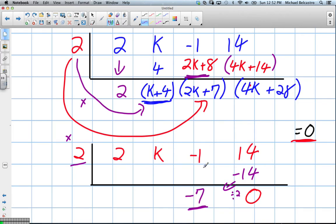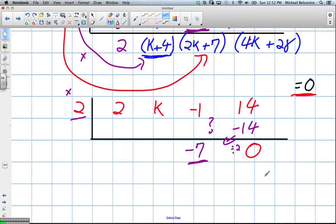Well, negative 1 plus what would give us negative 7? One way we can figure it out is to do this: negative 1 plus x equals negative 7.